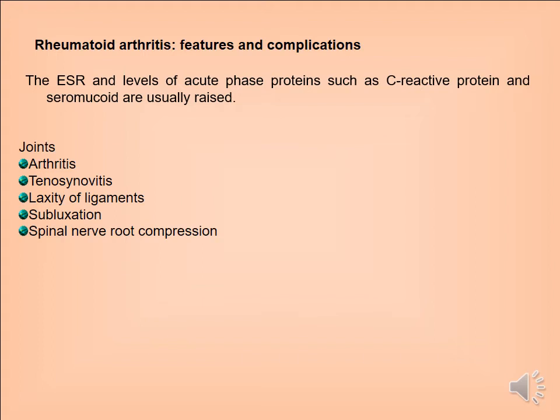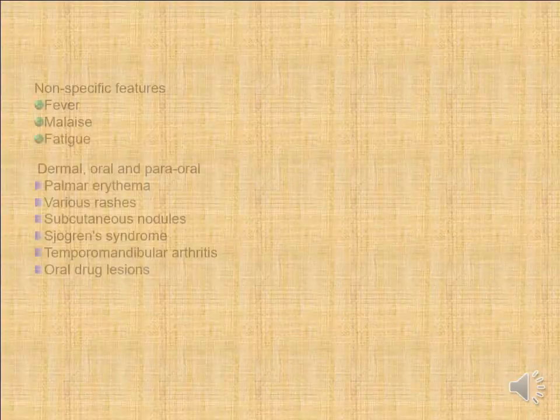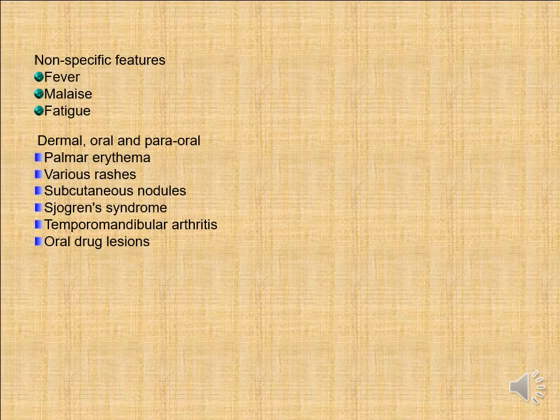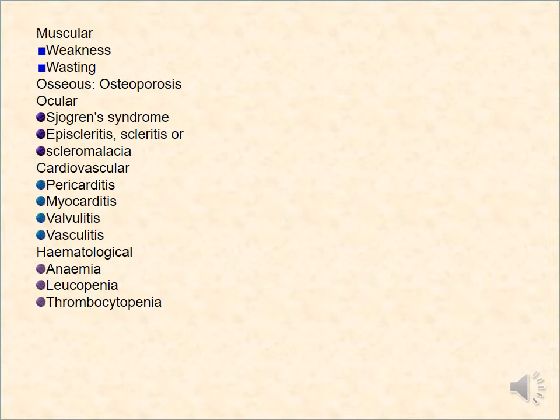Rheumatoid arthritis features and complications: the ESR and levels of acute phase proteins such as C-reactive protein are usually raised. Joint complications include arthritis, laxity of ligaments, subluxation, and spinal nerve root compression. Non-specific features include fever, malaise, and fatigue. Dermal signs include palmar erythema, various rashes, subcutaneous nodules, Sjögren's syndrome, temporal arteritis, and oral drug lesions. Musculoskeletal signs include weakness, wasting, and osteoporosis. Ocular complications include Sjögren's syndrome, episcleritis, and scleritis. Cardiovascular disease includes pericarditis, myocarditis, valvulitis, and vasculitis. Haematological disorders include anaemia, leucopenia, and thrombocytopenia.